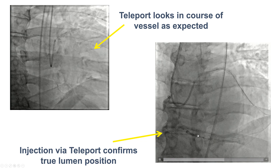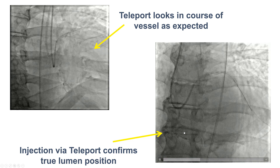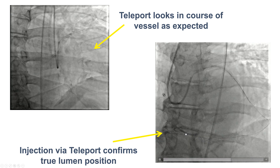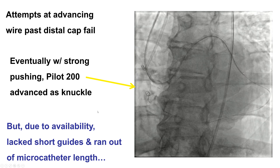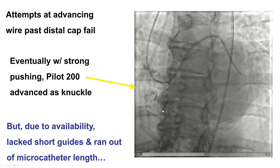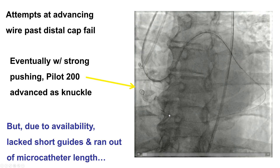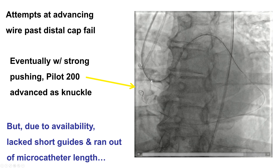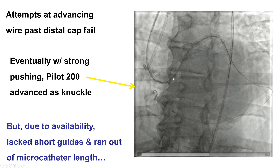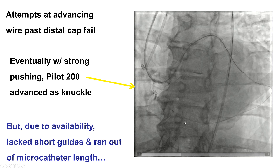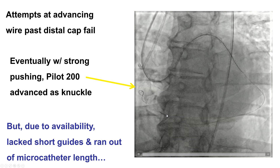We now had access to the distal true lumen. We performed an injection showing diffuse disease in the distal right coronary artery and then started to work our way backwards. We were eventually able to advance a Pilot 200 to the mid-right coronary artery. Unfortunately, because we were using the radial access and did not have 90 cm long radial guides, this was a longer guide and epicardial collateral, and we ran out of microcatheter space with the 150 cm Teleport.